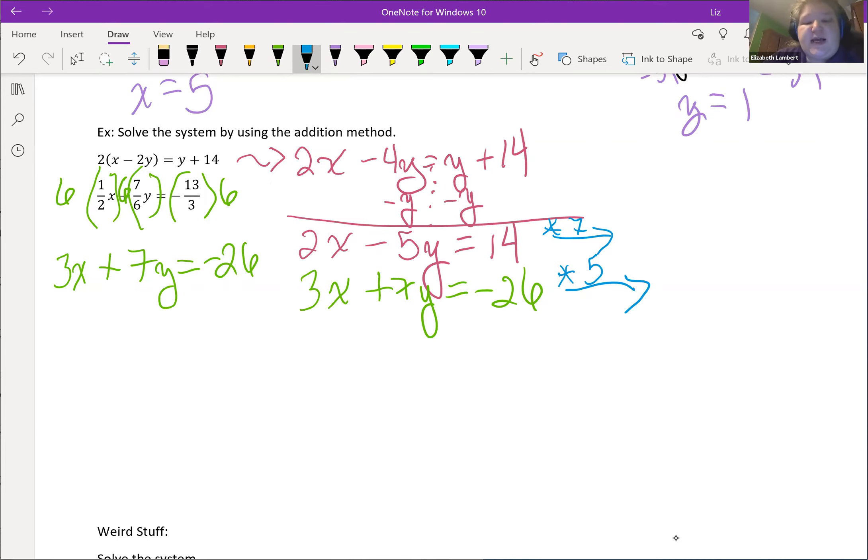Let's go ahead and crunch that. So seven times two is going to be 14x's. The numbers are going to get even bigger. Minus 35y's. And then seven times 14, that's seven times seven times two, 49 times two, 98. Then here 15x's so we're going to get 19x's.